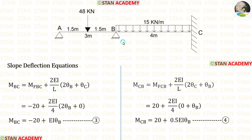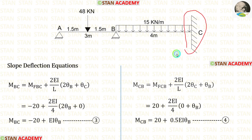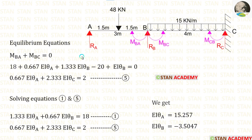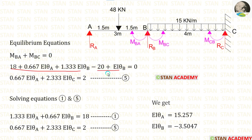Now let us make the slope deflection equations for span BC. After applying the fixed end moments with a length of BC equal to 4 meters, and noting that at point C there is a fixed support where there is no slope, theta C equals 0. We substitute theta C = 0 into the equations. We now have one equilibrium equation, but we need two. The second equilibrium equation is made at joint B, where MBA + MBC = 0. We add the slope deflection equations for MBA and MBC to form the second equilibrium equation, which we label as equation number 5.